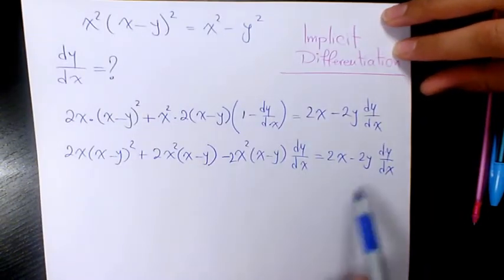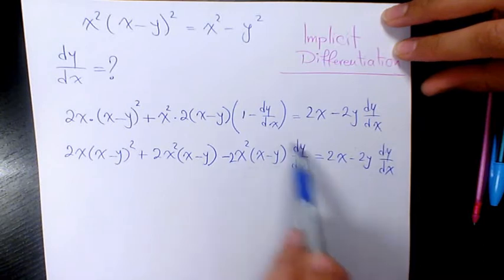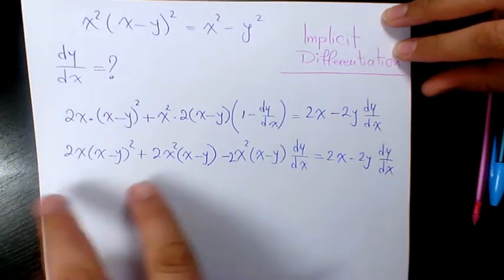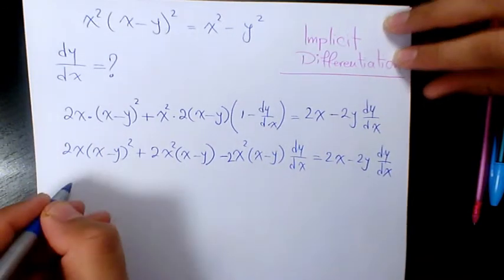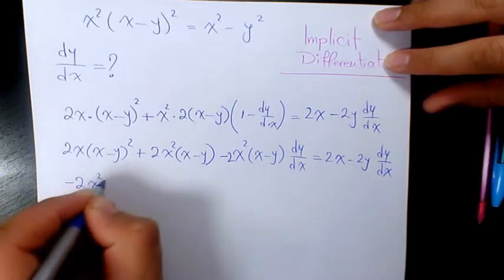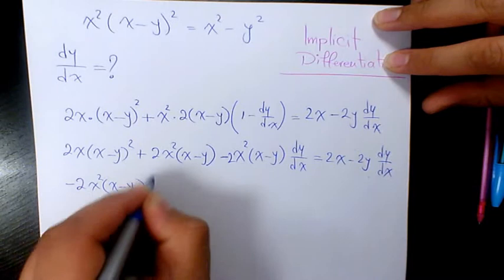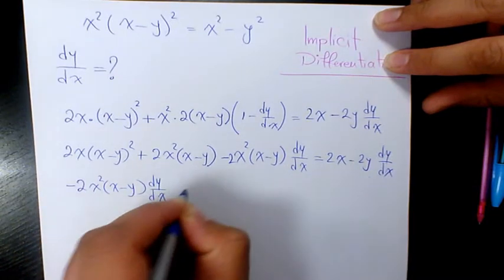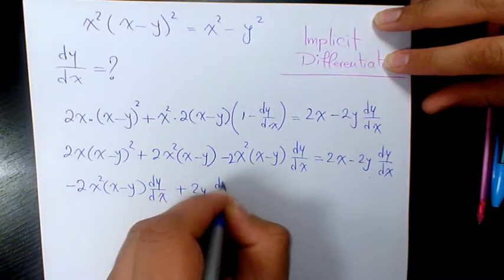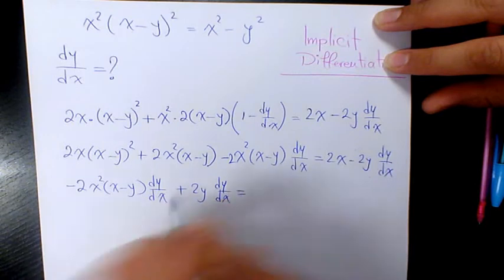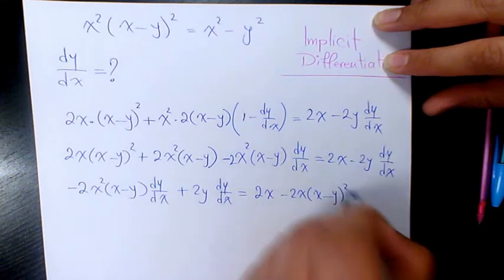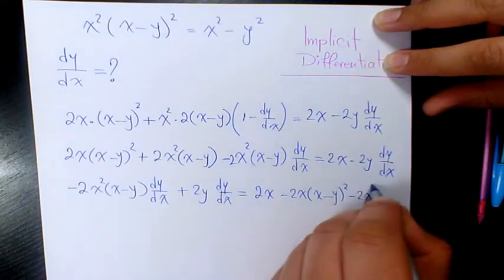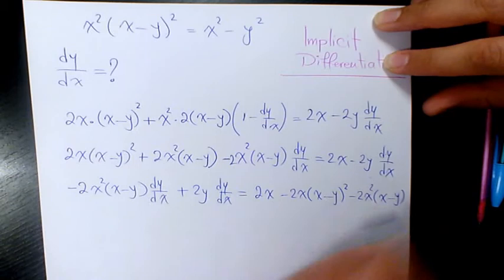Now we keep the dy/dx terms on the left-hand side and move the others to the right. So we get negative 2x squared(x minus y) dy/dx plus 2y dy/dx equals 2x minus 2x(x minus y) squared minus 2x squared(x minus y).